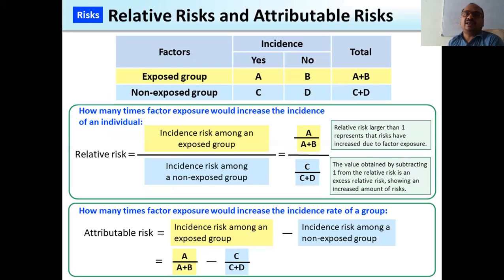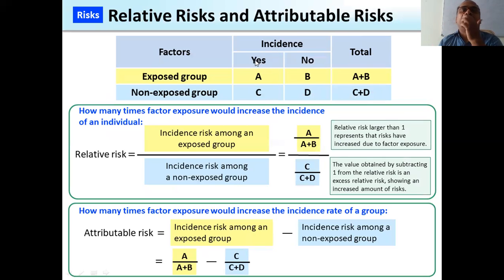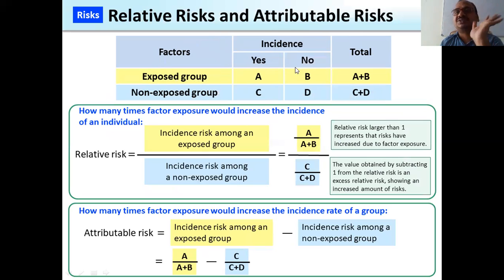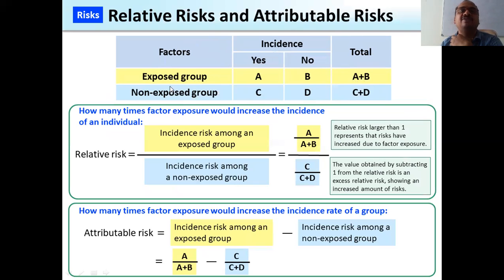Here is the same A, B, C, D table for relative risk and attributable risk. The factors are exposed smokers versus non-smokers, and the outcome is COPD — yes or no. I have given different colors for the exposed group and non-exposed group to make it clear.